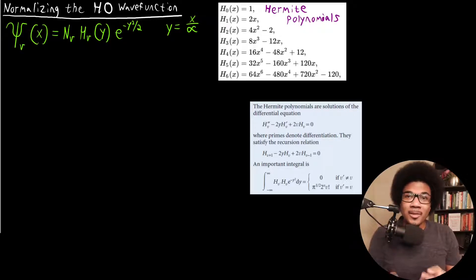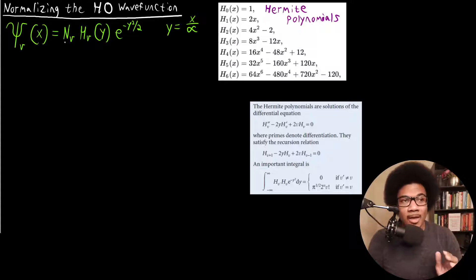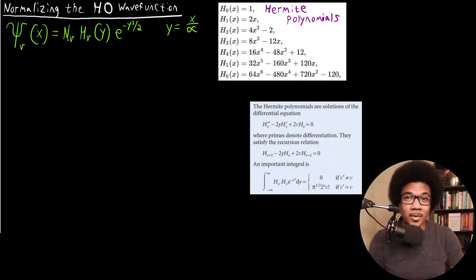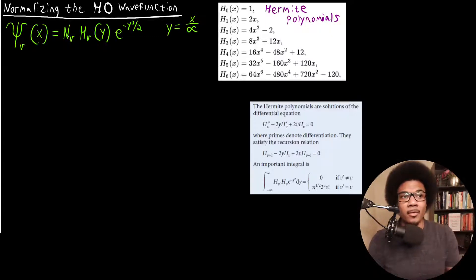In this video, we're going to dig a little bit deeper into the properties of the harmonic oscillator wave function — more specifically the Hermite polynomials and the normalization constant. We always know we have to have a normalization constant for a wave function, and for the harmonic oscillator wave function it's going to be a little bit different from the particle in the box because it's actually going to depend on what the quantum number is. So if you have a quantum number of one, that normalization factor is going to be different if you have a quantum number of ten.